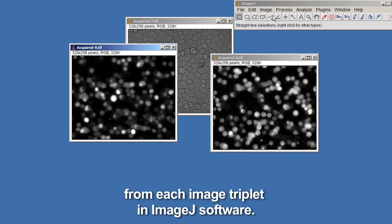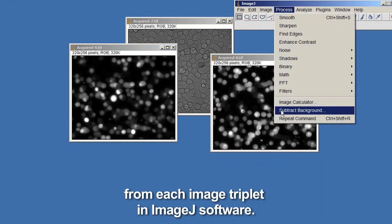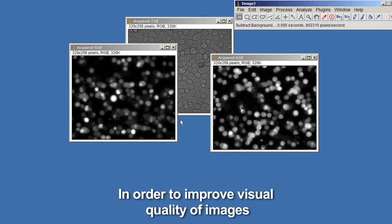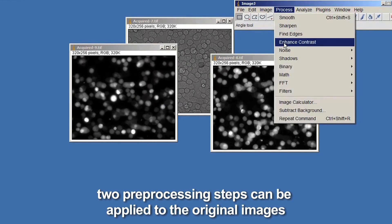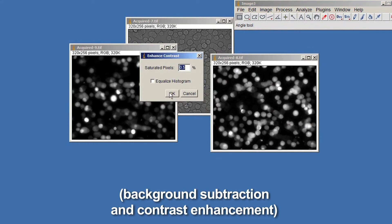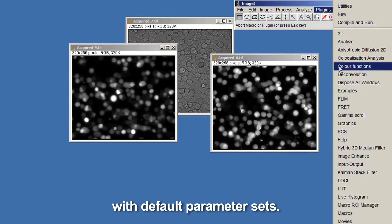Create three-channel images from each image triplet in ImageJ software. In order to improve visual quality of images, two pre-processing steps can be applied to the original images: background subtraction and contrast enhancement, with default parameter sets.